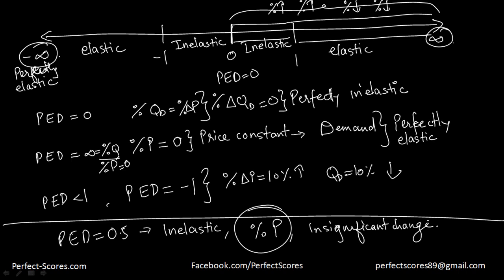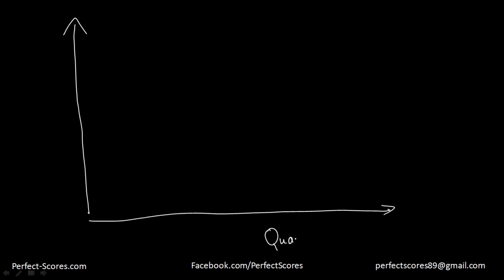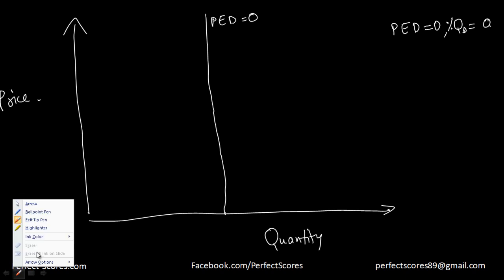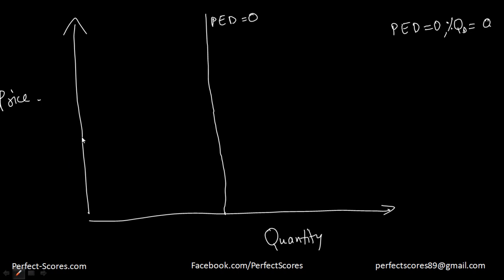Now let's understand the curves of price elasticity of demand and how they relate to the slope. With price on the vertical axis and quantity on the horizontal axis: when PED equals 0, the curve is a vertical line — no matter what change in price I bring about, the quantity demanded remains the same. This is price elasticity of demand equal to zero.